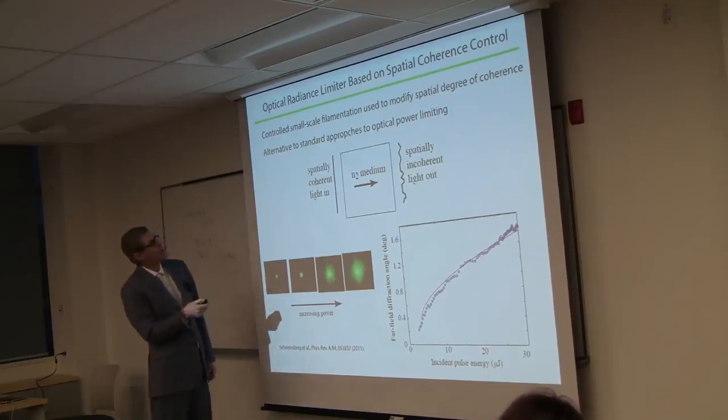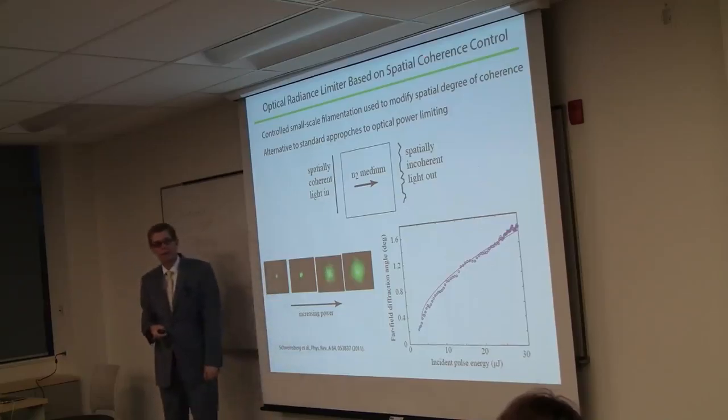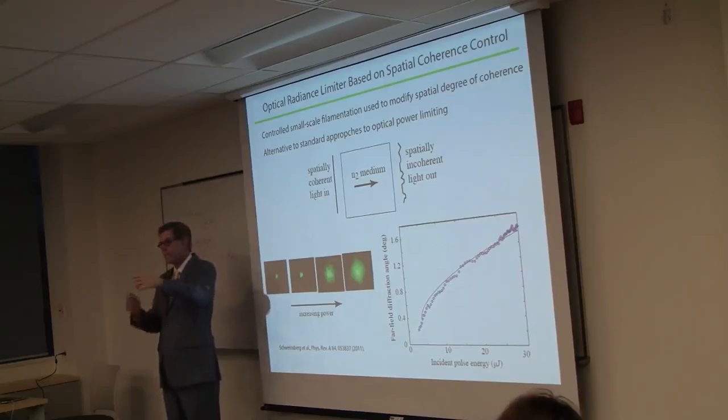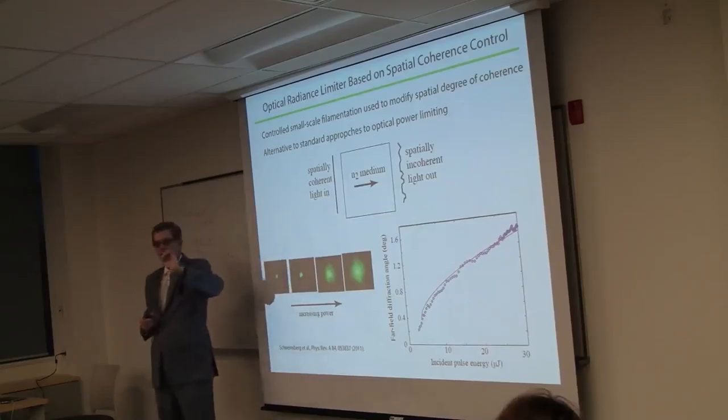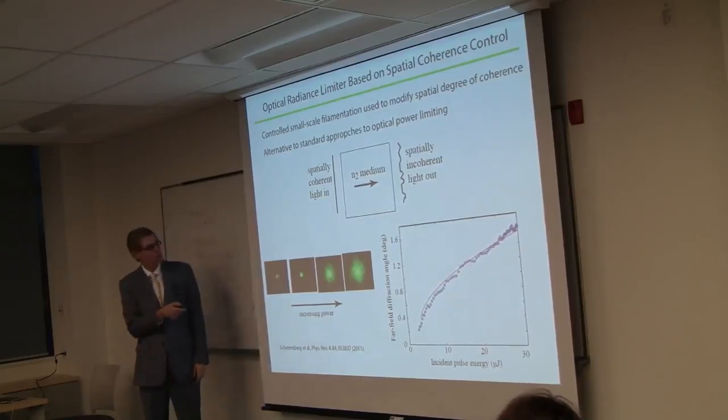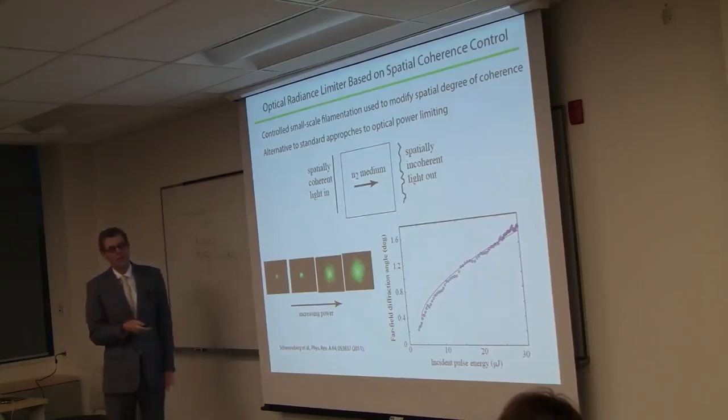There are people who want to build laser power limiters so that you don't burn up sensitive components, like the retina of your eye. So many people are trying to build power limiters. It occurred to us that maybe the radiance is an equally important, if not a more important, quantity. Radiance is one of the fundamental radiometric units. The radiance tells you what the intensity will be at the focal region.